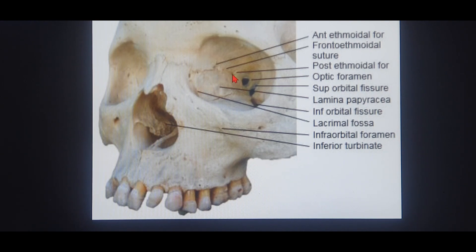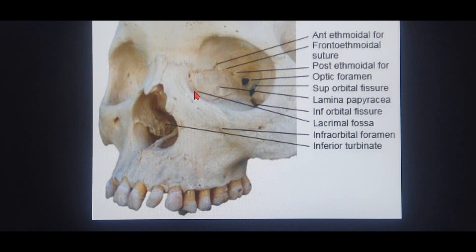Most young ENT surgeons get this wrong at this point. They correctly know that the anterior ethmoidal artery is 24 mm from the anterior lacrimal crest, but they mistakenly think the posterior ethmoidal foramen is also measured from the anterior lacrimal crest at 12 mm. That is wrong. You have to go from anterior to posterior, so 24 mm comes first — 6 mm is way posterior to that.